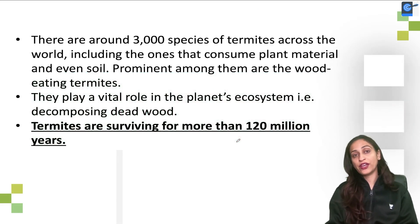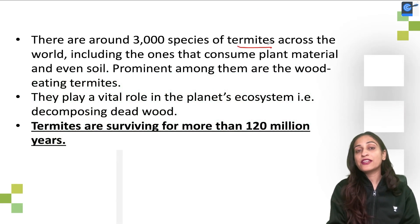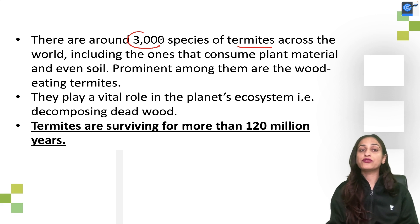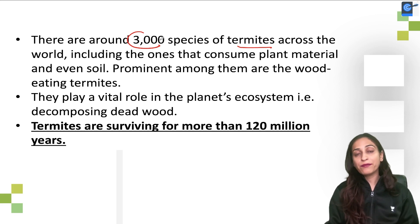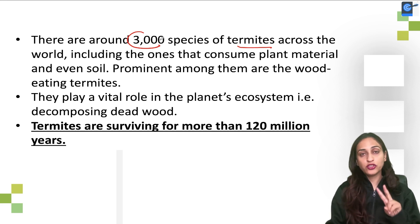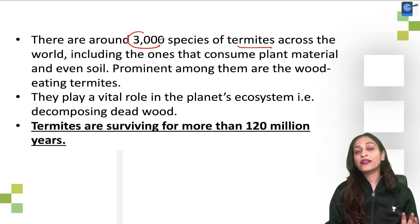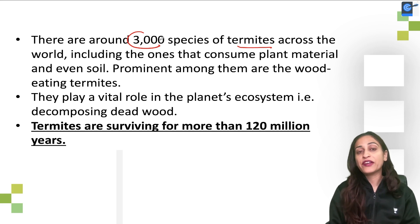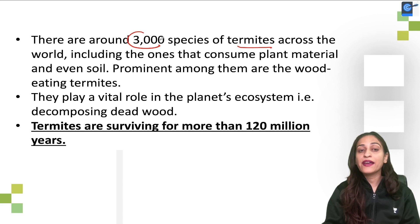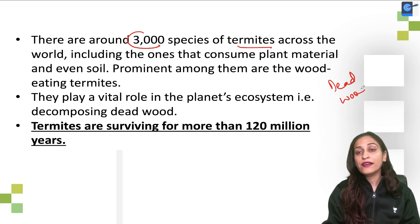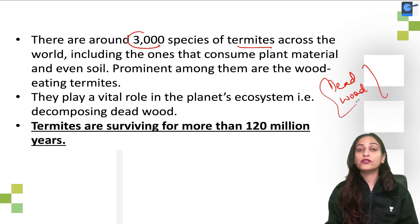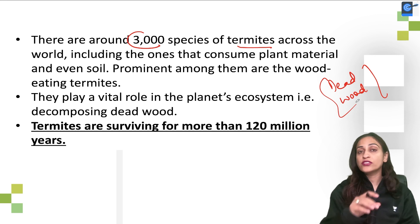This is a cycle which will be difficult to stop. There are 3,000 termite species in the world which consume plant material — soil, plant material, and wood. These wood-eating termites play an important role in the planet's ecosystem because dead wood needs to be decomposed, and they perform that role.